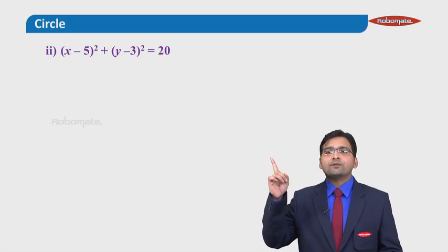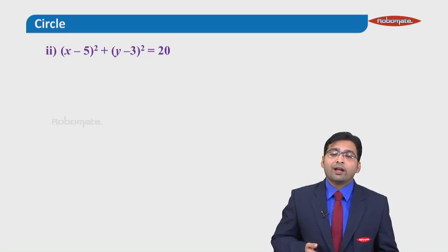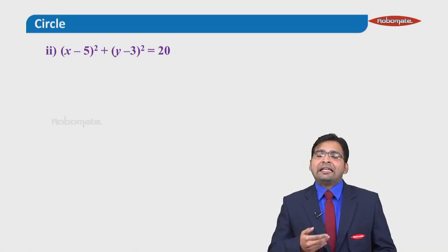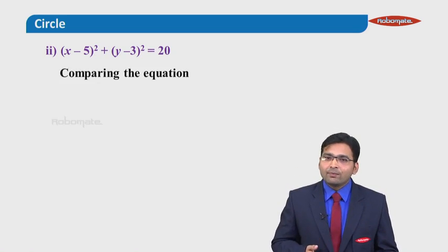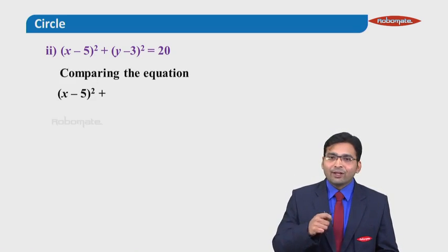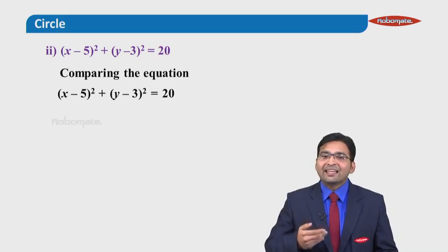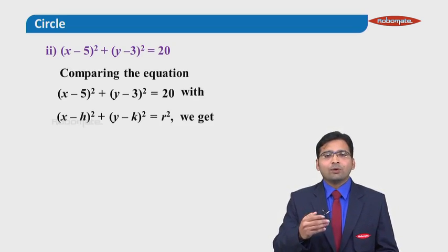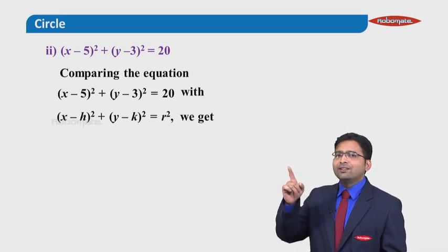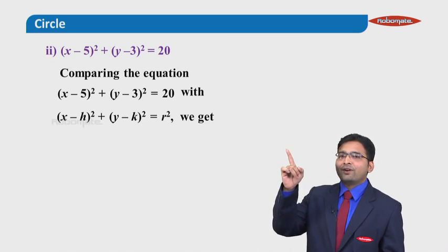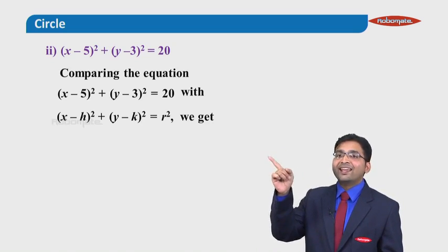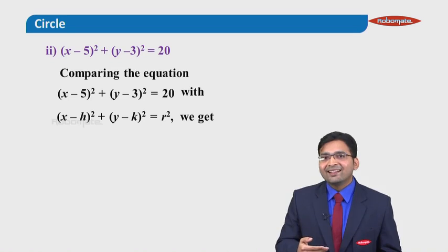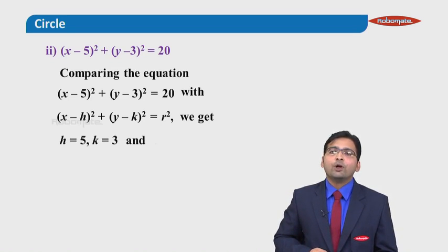The next question is: (x minus 5) squared plus (y minus 3) squared equals 20. Everyone must have identified this as a Type 2 question. We compare with the center-radius form. On the left-hand side, we have x minus h squared, so h equals 5.